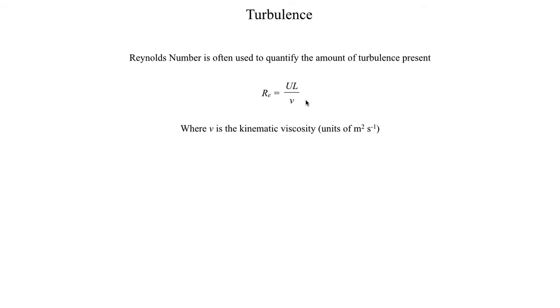A physical parameter often used to quantify turbulence is the Reynolds number, defined as the characteristic horizontal wind times the characteristic length scale L, all divided by the Greek letter nu, which represents the kinematic viscosity of the flow pattern. A typical value at around 0 degrees Celsius is 1.46 times 10 to the minus 5th meters squared per second. Reynolds number is a dimensionless parameter — it has no units — so in order for the equation to be dimensionally consistent, the denominator must also be in units of meters squared per second.